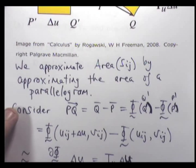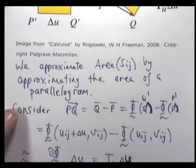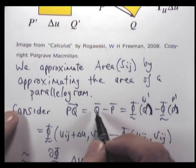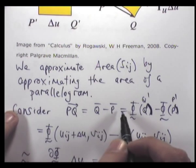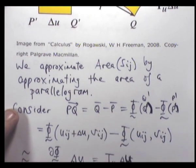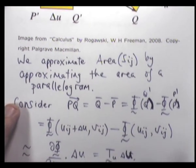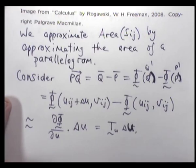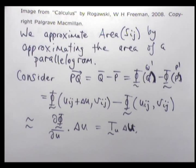[Student: Why did you point it to Q?] Because this is the position vector of Q and this is the position vector of P. If the notation's unclear, I'm happy to explain it.